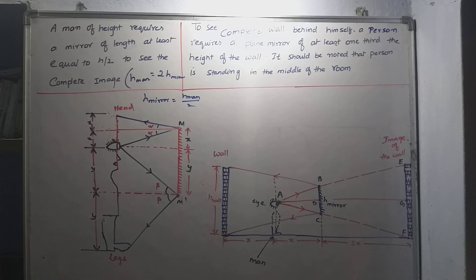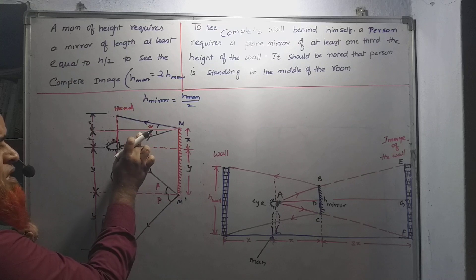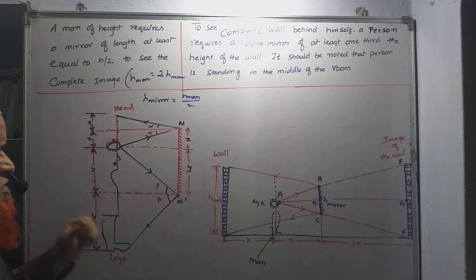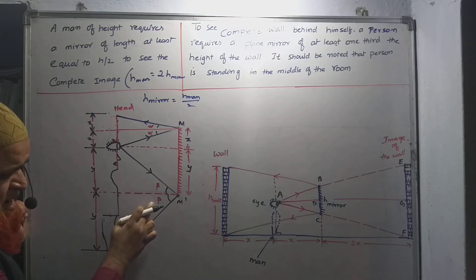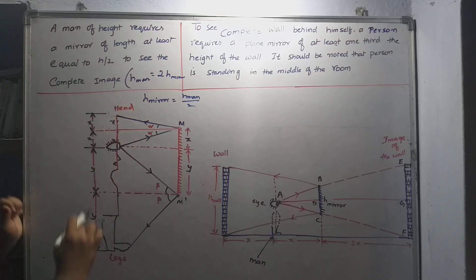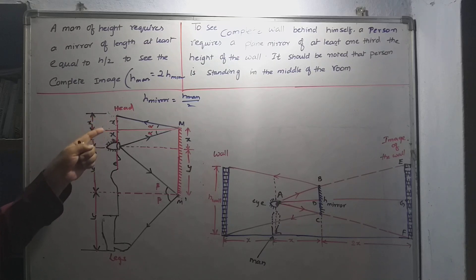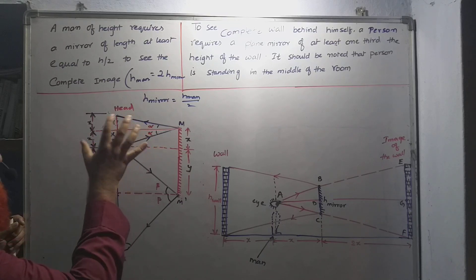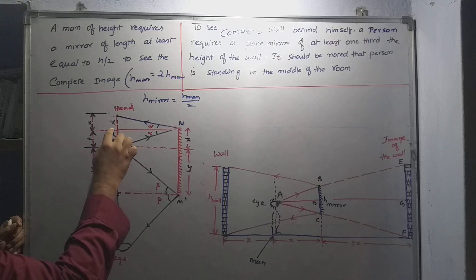The light ray reflects back following the law of reflection — angle of incidence equals angle of reflection, that is alpha equals alpha. Similarly, at the bottom point, it also follows the law of reflection — the angle of incidence equals the angle of reflection, both are the same. This part of the diagram is considered to be X, and this part is also X. Why? Because sides opposite to equal angles are equal.